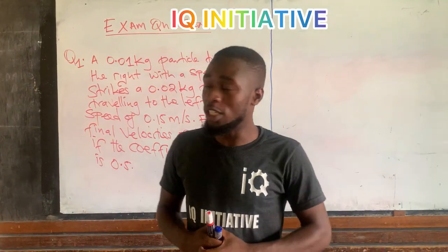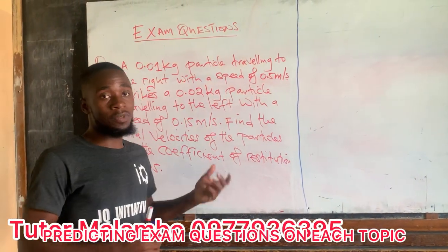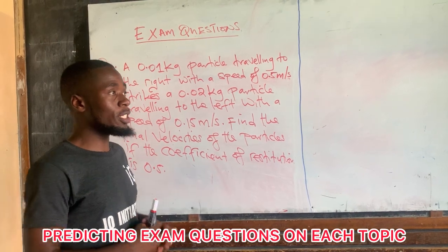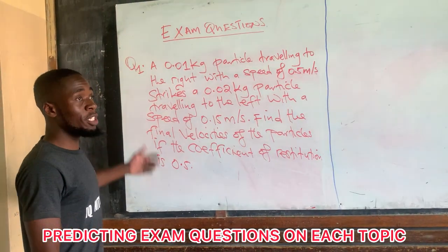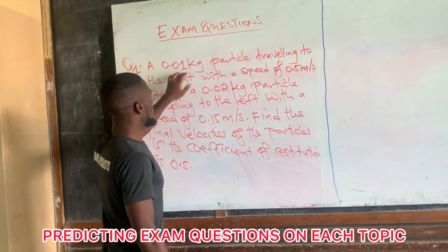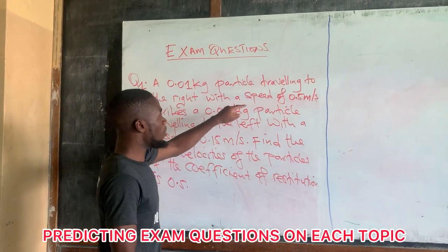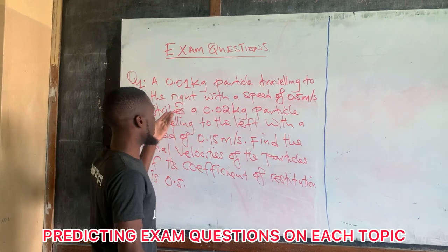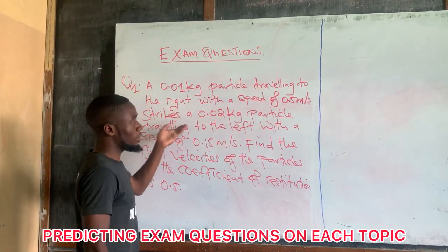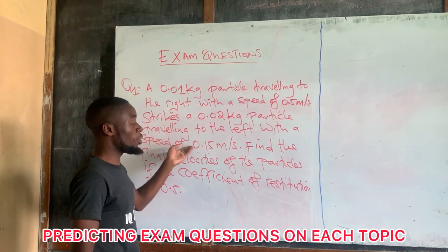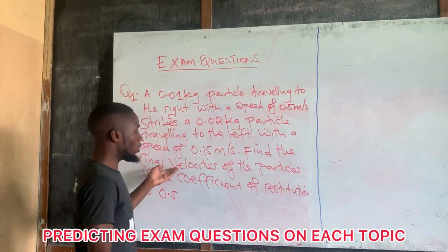Welcome to IQ Online Classes. Today we are going to discuss examinations of each and every topic in engineering science and physics. We will start with some momentum. A 0.01 kg particle travelling to the right with a speed of 0.5 meters per second strikes a 0.02 kg particle travelling to the left with a speed of 0.15 meters per second. Find the final velocity for the particles if the coefficient of distribution is 0.40.